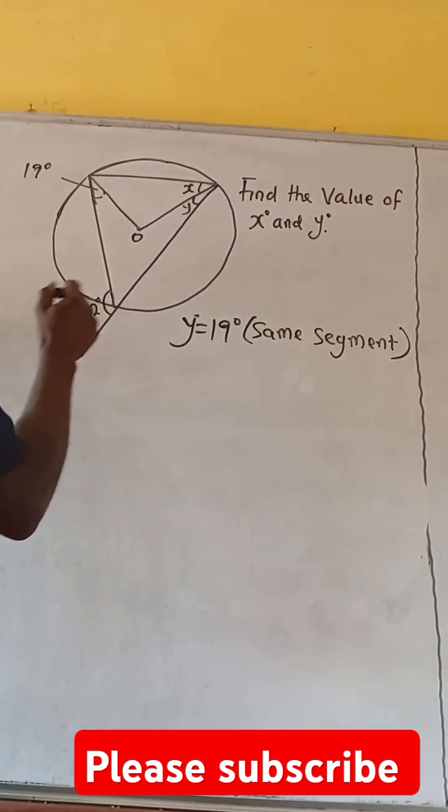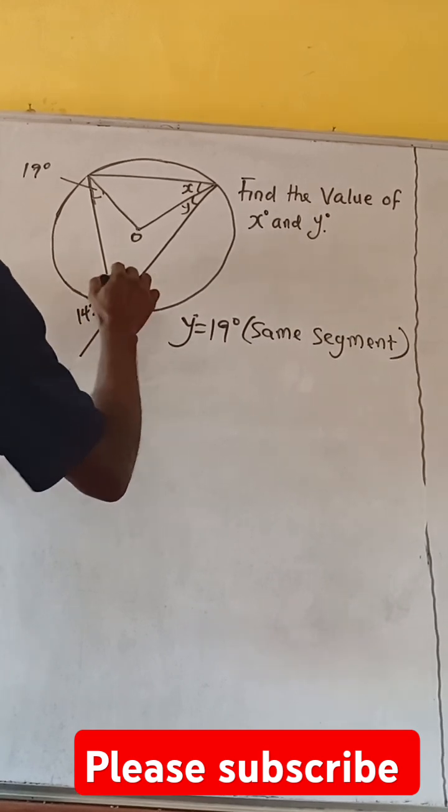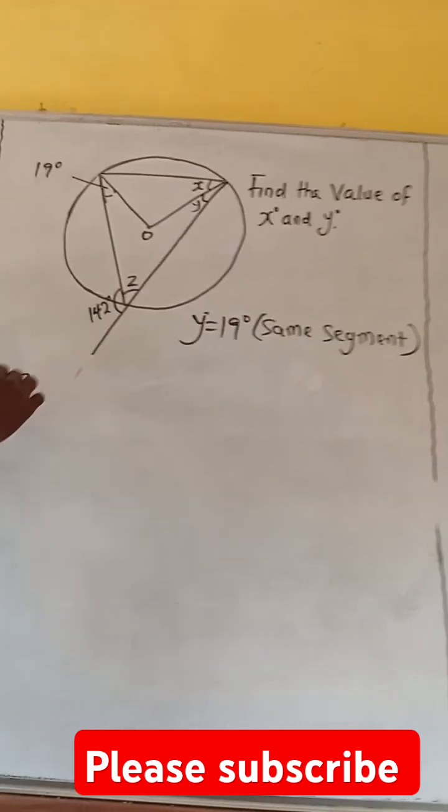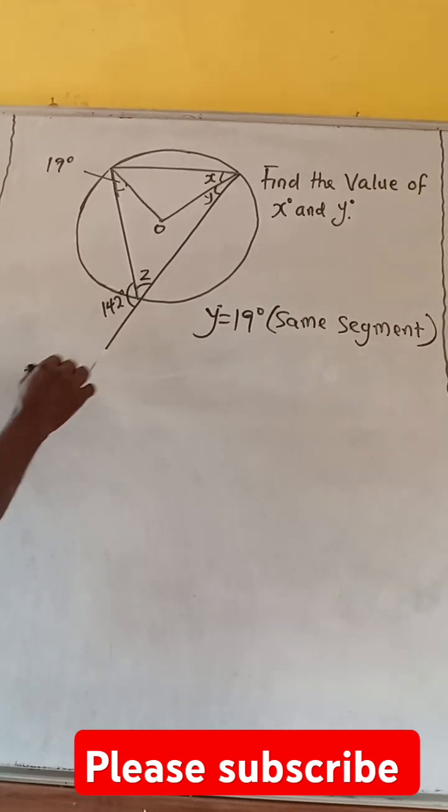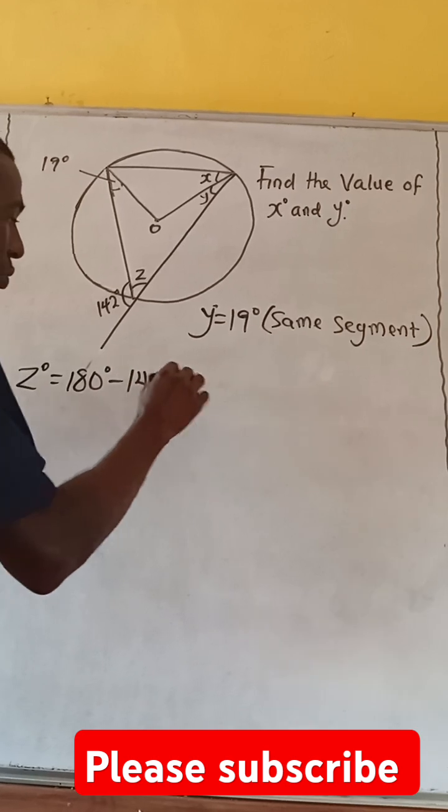Now, let's go for x. To solve x, let's look for the value of this. Let's maybe call this place z. So, it means our z equals 180 degrees minus 142. That will give us 38 degrees.